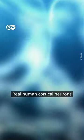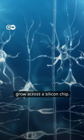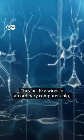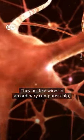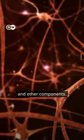Real human cortical neurons grow across a silicon chip. They act like wires in an ordinary computer chip, communicating with each other and other components.